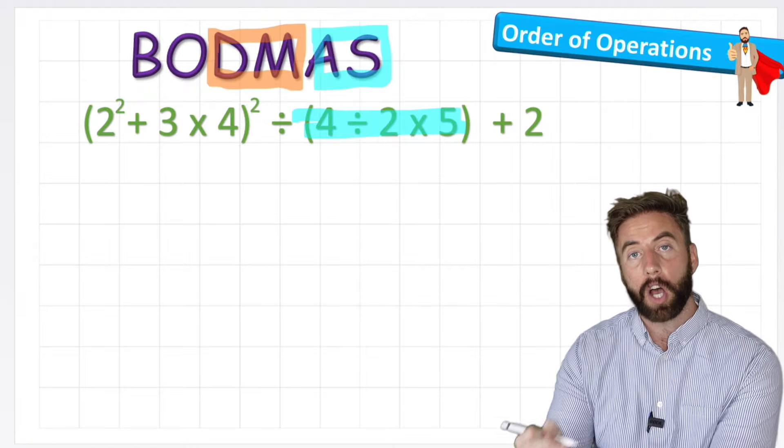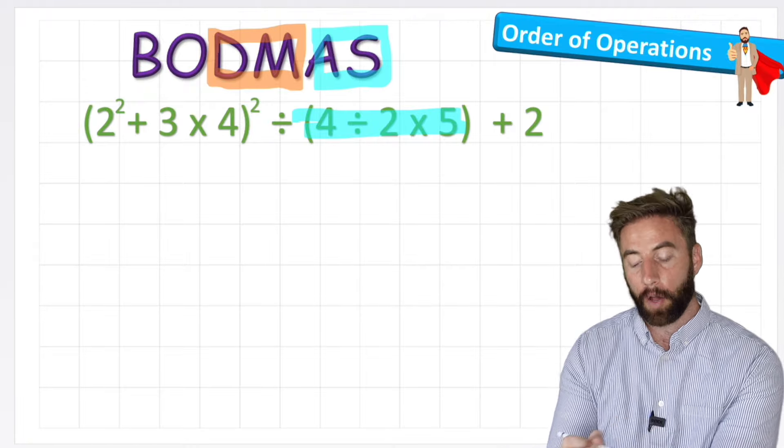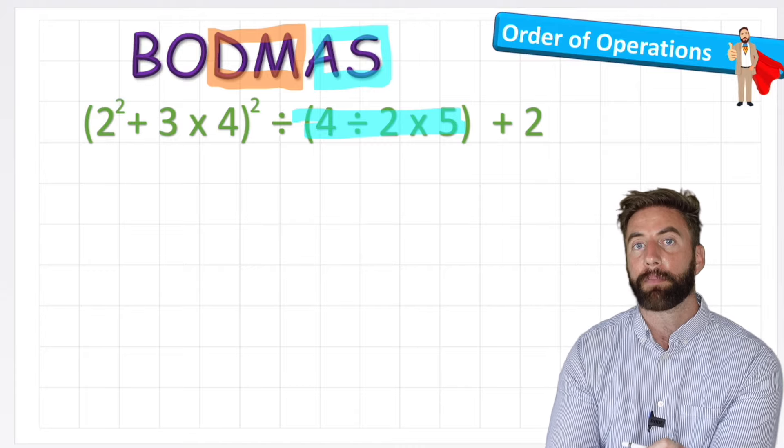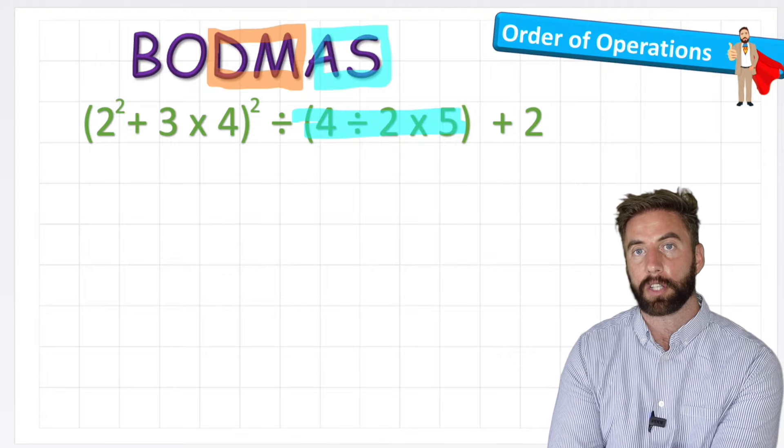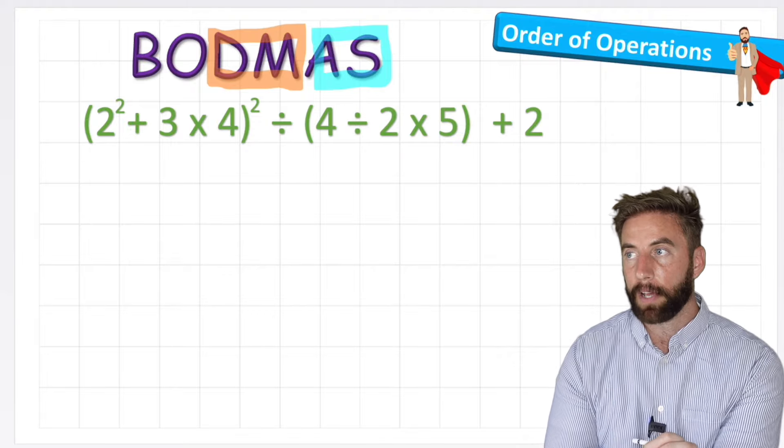But if it read 4 times 2 divided by 5, then I would actually start with my multiplication because that's first in the sequence. So my division and multiplication are linked, and so is my addition and subtraction. So with that in mind, let's begin.